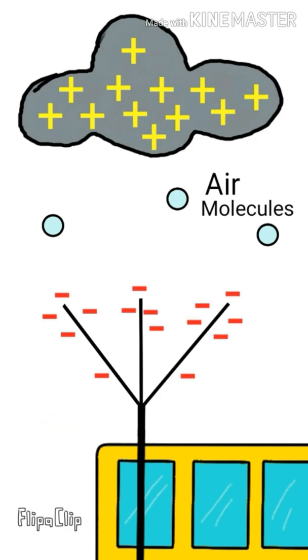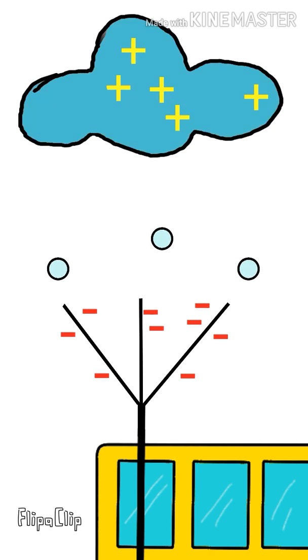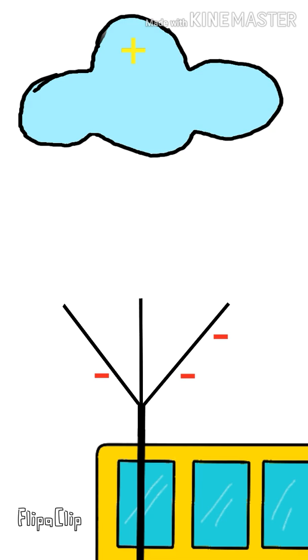The negatively charged rods attract the air molecules towards them by electrostatic induction. The molecules are then attracted by the rods and come close to them. They take up the negative charges from the rods and then they are attracted by the positively charged cloud. They go into the cloud and neutralize it.